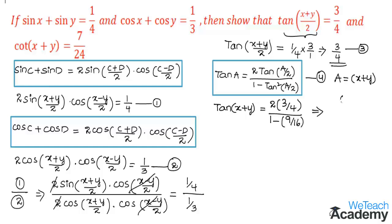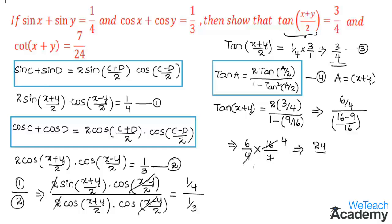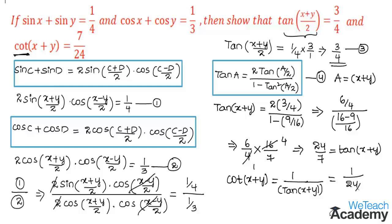Simplifying: the numerator is 2 into 3 by 4 which is 6 by 4. The denominator is (16 minus 9) by 16, which is 7 by 16. So tan(x+y) equals 6 by 4 multiplied by the reciprocal 16 by 7. Since 4 goes into 16 four times, we get 6 into 4 equals 24 divided by 7. So tan(x+y) equals 24 by 7. Therefore cot(x+y) equals the reciprocal of tan(x+y), which is 1 divided by (24 by 7), giving 7 by 24. Hence proved.